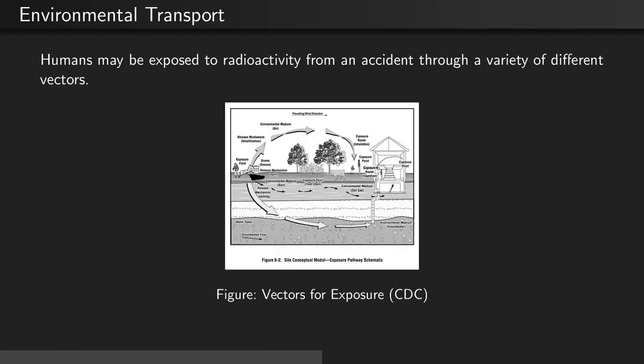Humans may be exposed to radioactivity from an accident through a variety of different vectors. This image displays some of those. For example, radioactivity may seep into groundwater, or it may be exposed through the air and cause an inhalation risk.